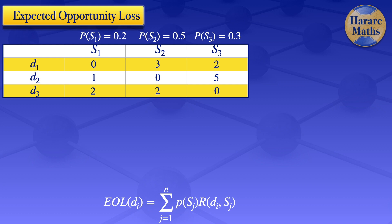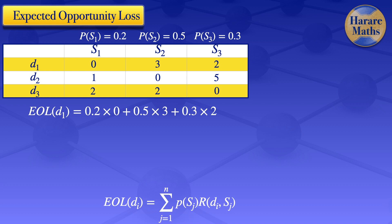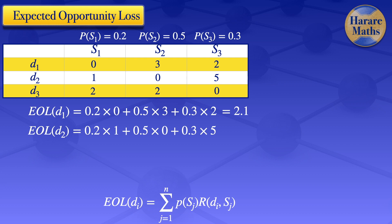We will now evaluate the expected opportunity loss for decision number 1. We take the probability of state of nature S1, 0.2, multiplied by the corresponding regret which is 0, plus the probability of S2, 0.5, times the corresponding regret of 3, plus the probability of S3, 0.3, times the corresponding regret which is 5. This result gives us 1.7.